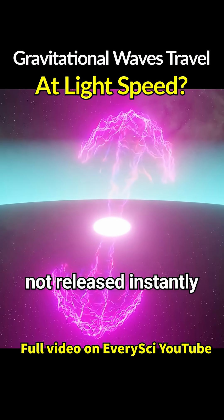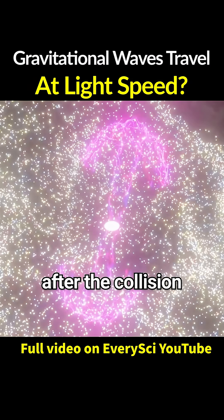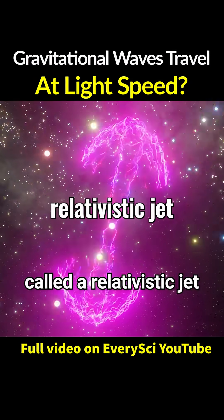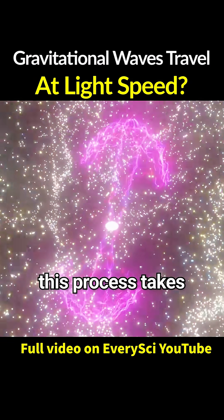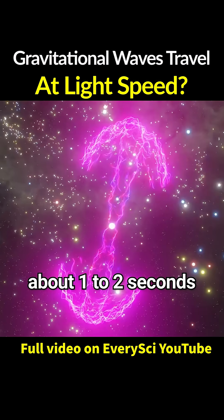On the other hand, gamma rays are not released instantly. They are released after the collision, when a burst of plasma called a relativistic jet occurs. According to scientists, this process takes about 1 to 2 seconds.